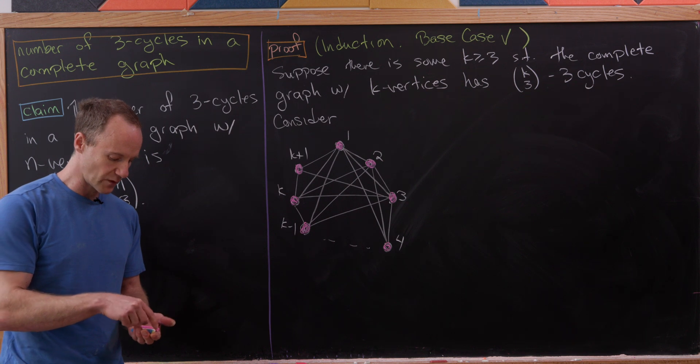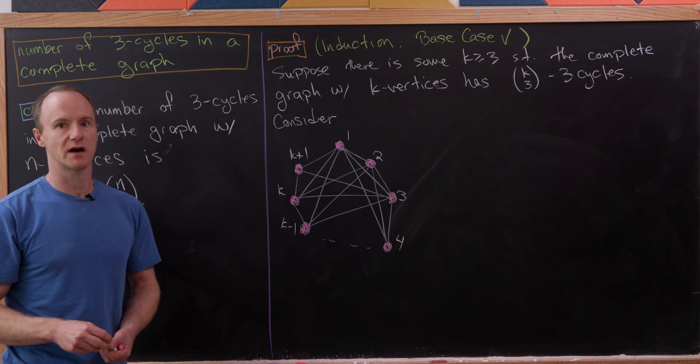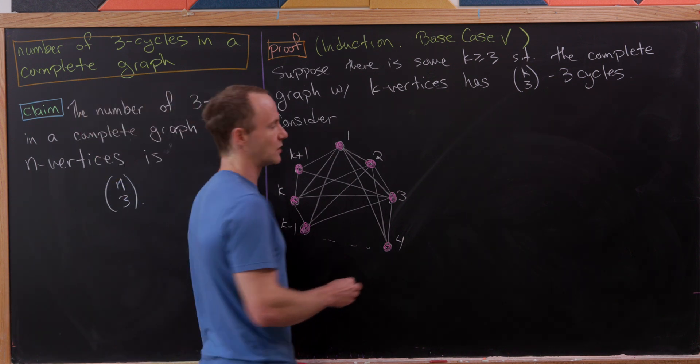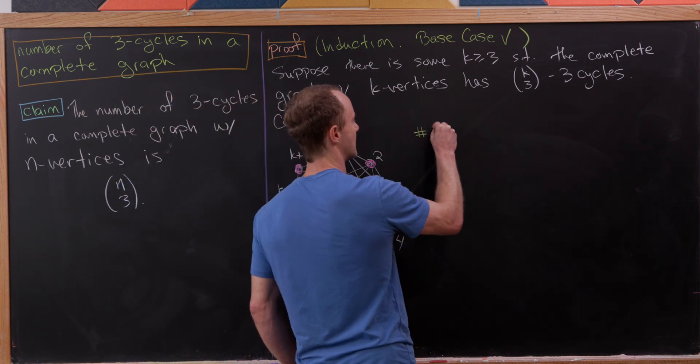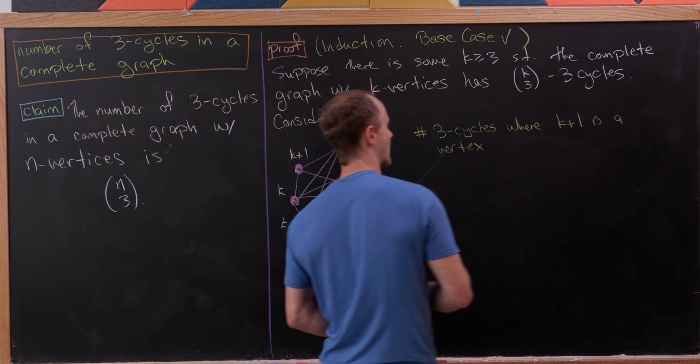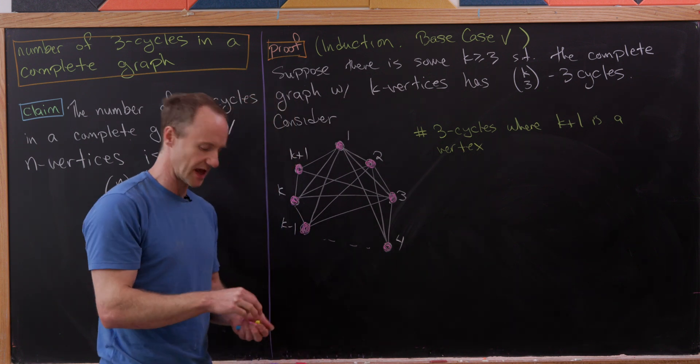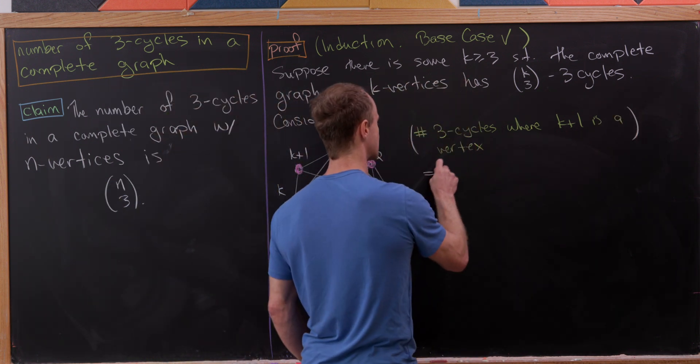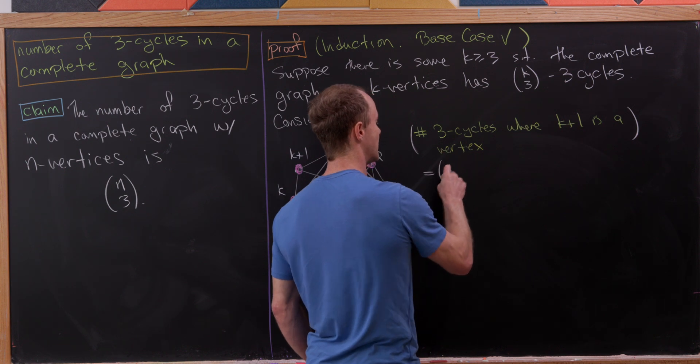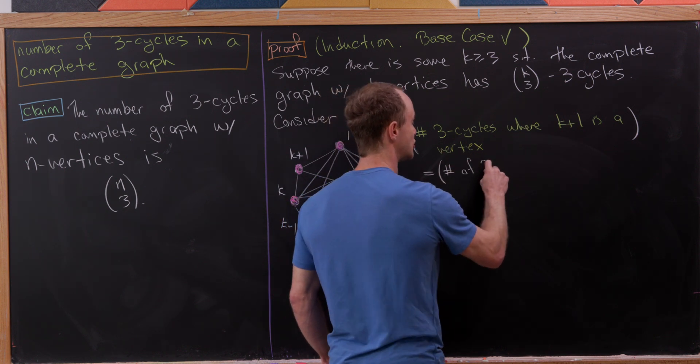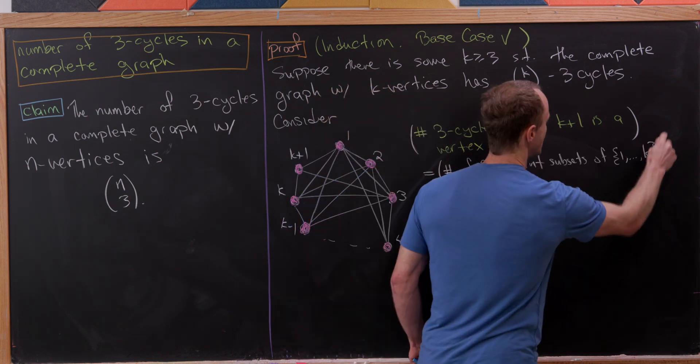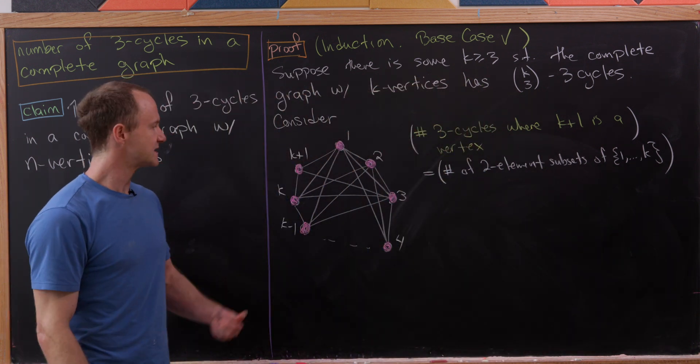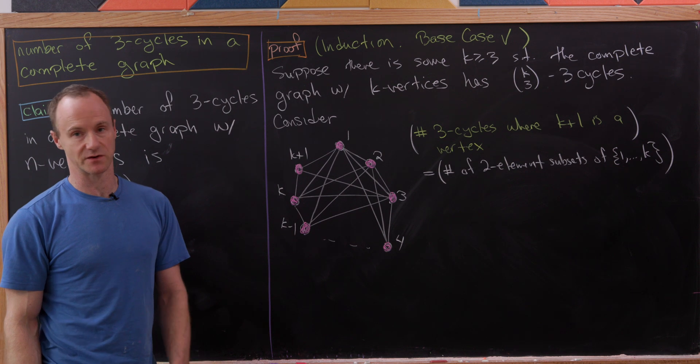Now the way we're going to do this is count up two flavors of three cycles, if you will. Let's first count the number of three cycles where k+1 is a vertex. Observe that this is pretty clearly equal to the number of two-element subsets of the set from 1 to k.